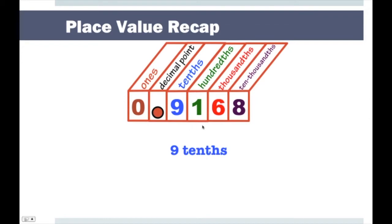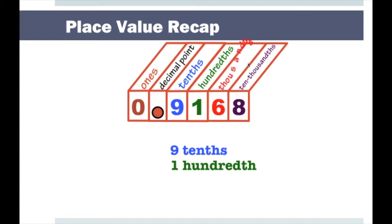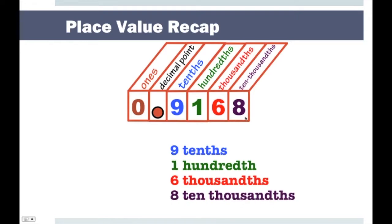What place value do you see here? That's the number nine — this is the tenths place, so that would be nine tenths. How about here? That's the number one, and the place value is the hundredths place, so this is one hundredth. How about here? This is the number six — the place value is the thousandths place, so this is six thousandths. And how about here? That's the number eight — this is the ten-thousandths place, so this would be eight ten-thousandths.